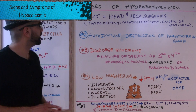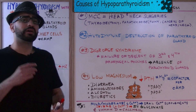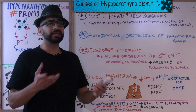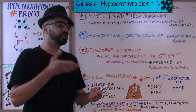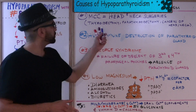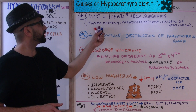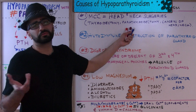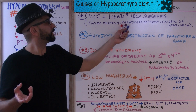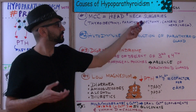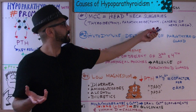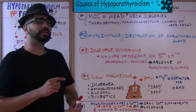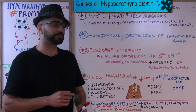Now let's talk about the causes. The most common cause of hypoparathyroidism is neck and head surgeries — anywhere you're going in and doing something invasive. Examples include thyroidectomy — removing the thyroid gland or part of it — parathyroidectomy to remove a parathyroid tumor, and surgeries for cancers of the head and neck. That's the number one reason patients exhibit hypoparathyroidism.